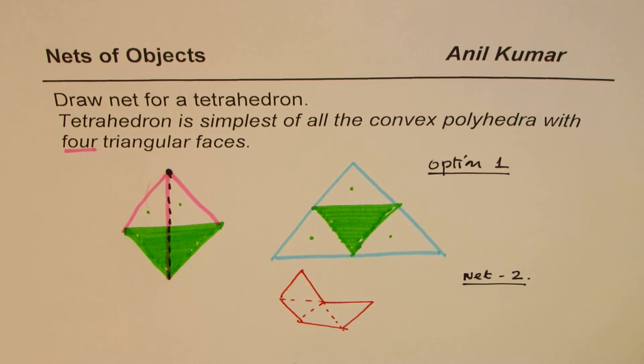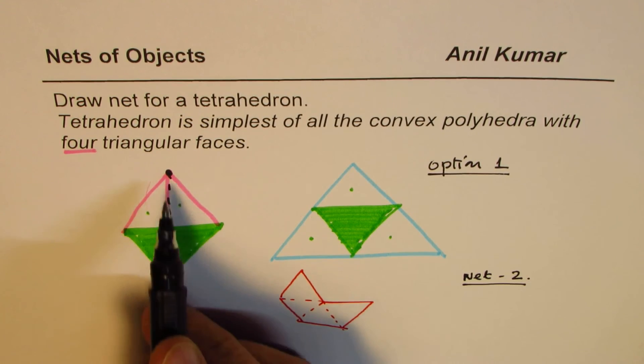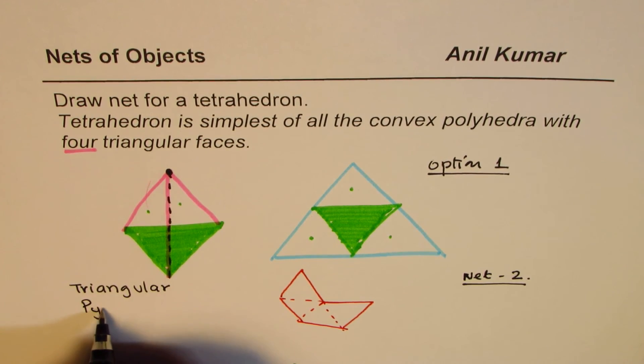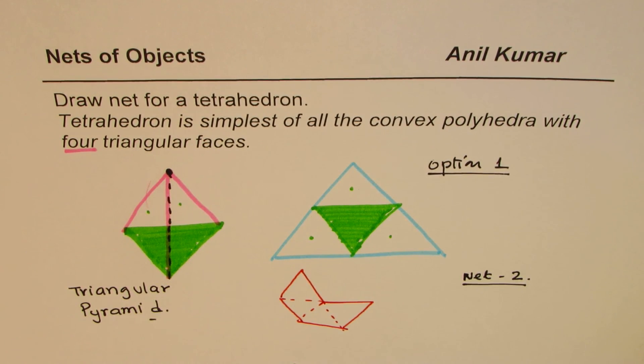This is called tetrahedron. You could also call it as triangular pyramid. So either way, tetrahedron is the simplest structure which you have and it has four triangular faces. You could draw the net as shown in this particular video. I hope that helps. Thank you and all the best.